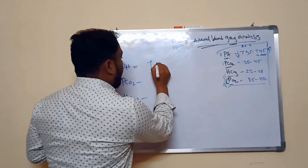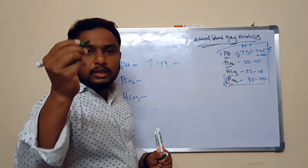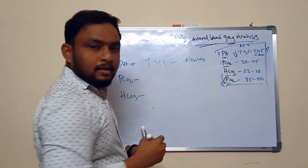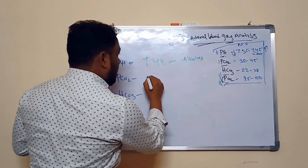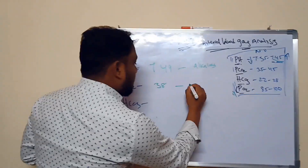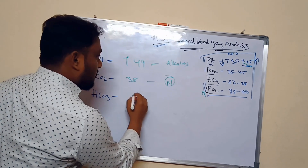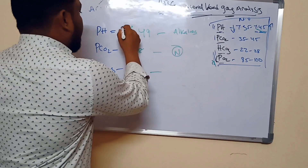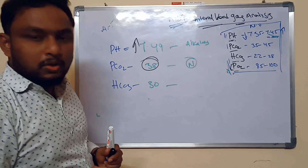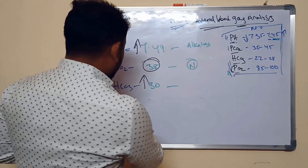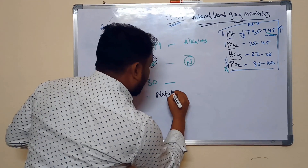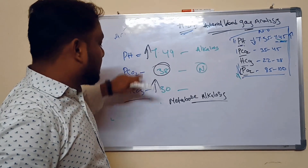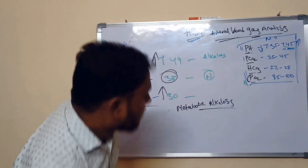Example two: pH is 7.49 — more than 7.45, so it is alkalosis. PCO2 is 38, which is normal. Bicarb is 30, which is increased. pH increased, no problem with PCO2, and bicarb also increased — so it is the metabolic component. The diagnosis is metabolic alkalosis.